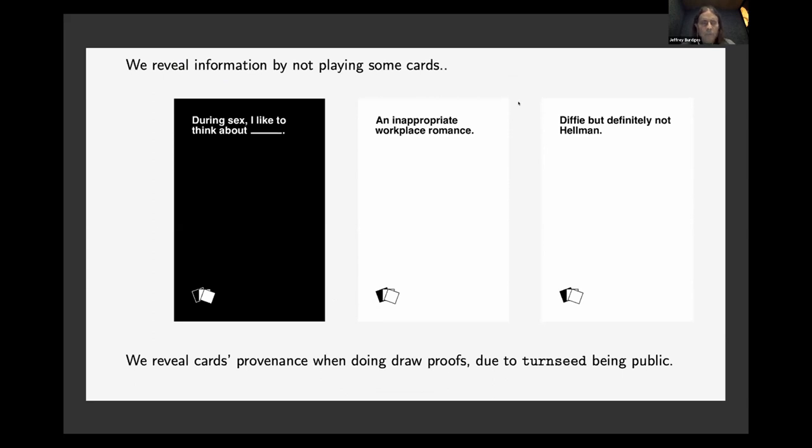But anyway, what I do want the main thing I want to tell you about is this. We often reveal information by not playing certain cards. So as a Cards Against Cryptography example, if this black card comes out and I had one of these cards in my deck and I chose not to play it, maybe that says something about me. But the problem is that these turn seeds, we were just keeping track of them in a public database so that we can check them when people do their proofs that they had a card later. We were just pulling these turns, we were just looking them back up in a public database. So then we know exactly when a player drew the card. So we might want to hide that and we can hide that using a zero knowledge proof.